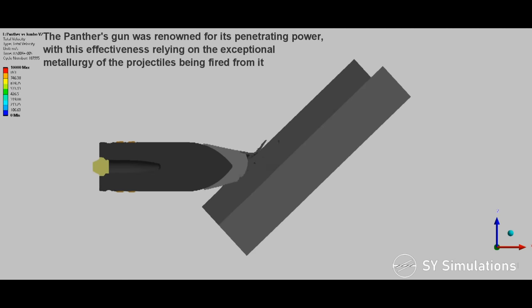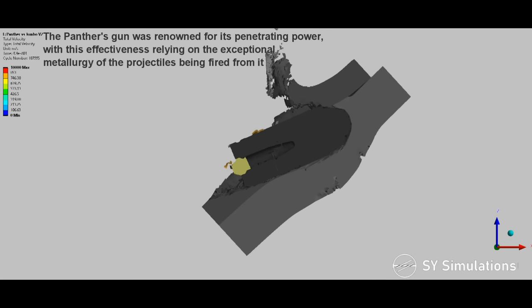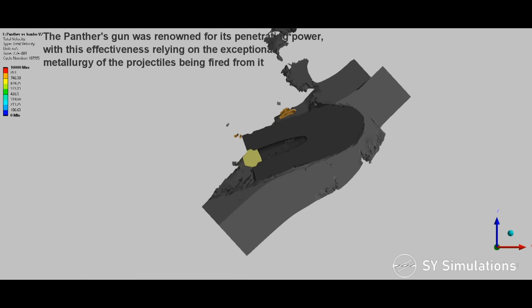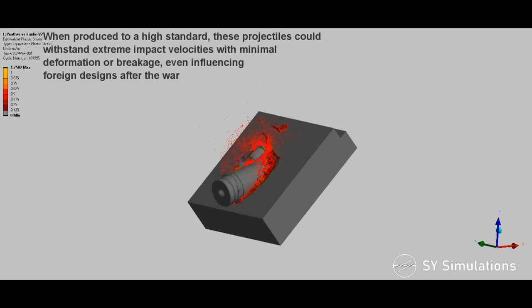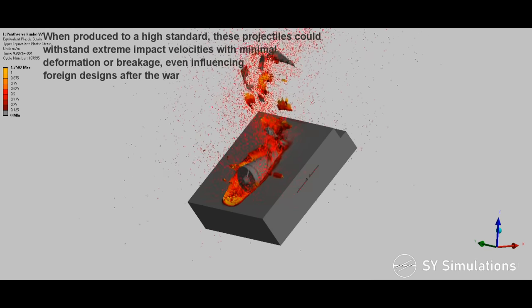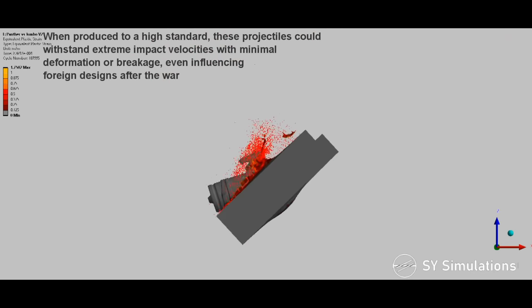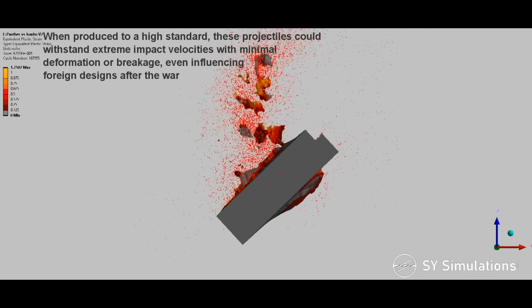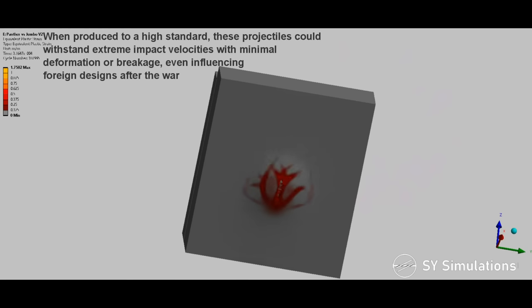The Panther's gun was renowned for its penetrating power, with this effectiveness relying on the exceptional metallurgy of the projectiles being fired from it. When produced to a high standard, these projectiles could withstand extreme impact velocities with minimal deformation or breakage, even influencing foreign designs after the war.